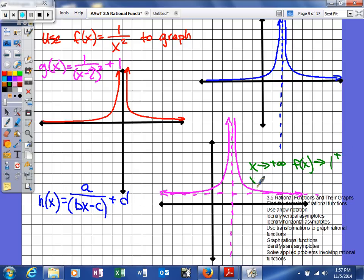And then very similar using arrow notation. As x gets larger and larger, your function is going to approach 1 from the positive side. So as x gets more and more negative, we get closer and closer to a value of 1.